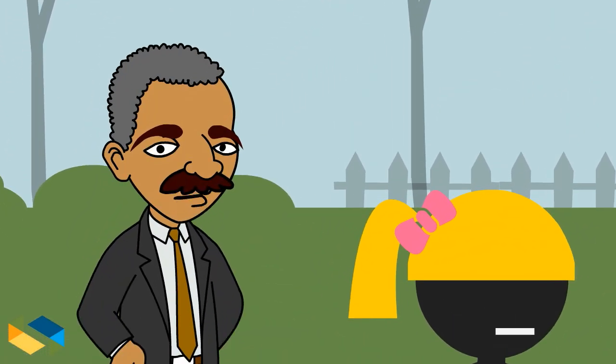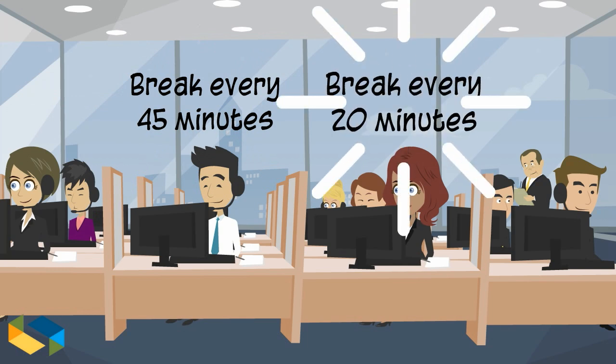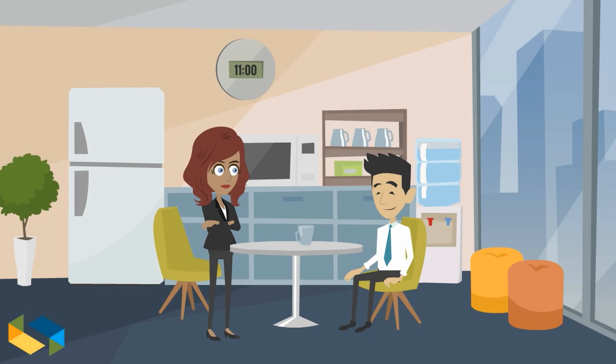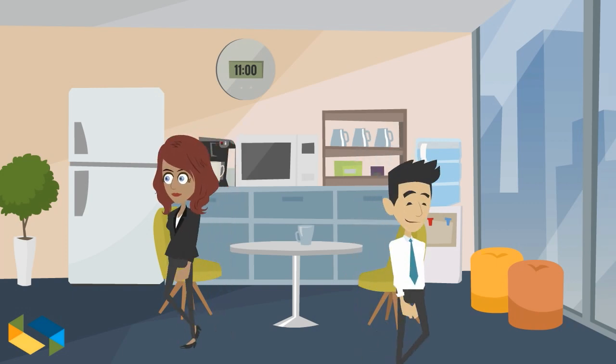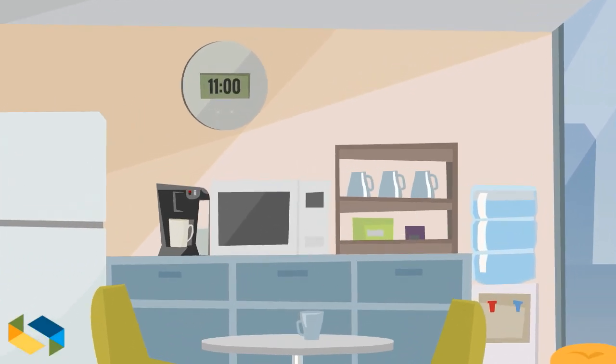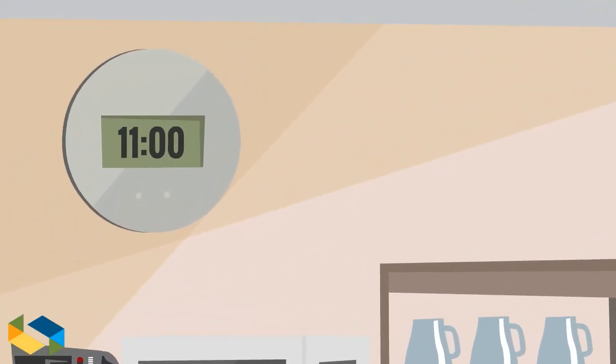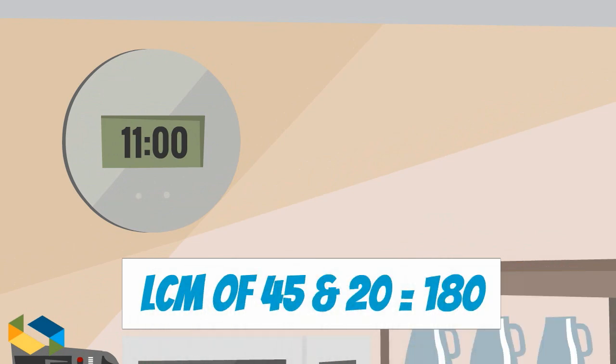Let's take another real life example. Tom takes a coffee break from work every 45 minutes while Jane breaks every 20 minutes for coffee. They just finished their break. How long before they meet together again for their breaks? Well, the answer lies in the lowest common multiple. The LCM of 45 and 20 is 180, which means they meet after 3 hours.